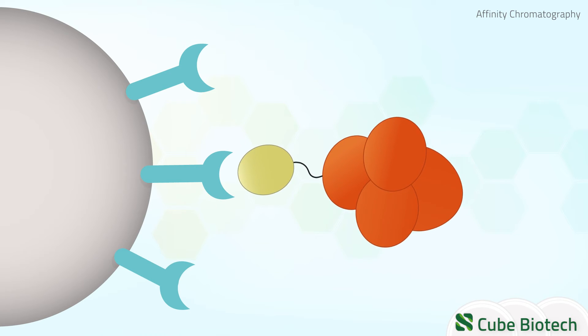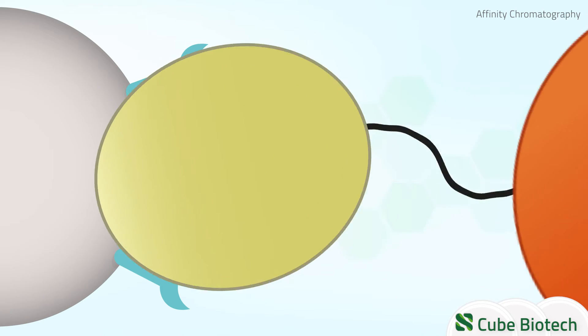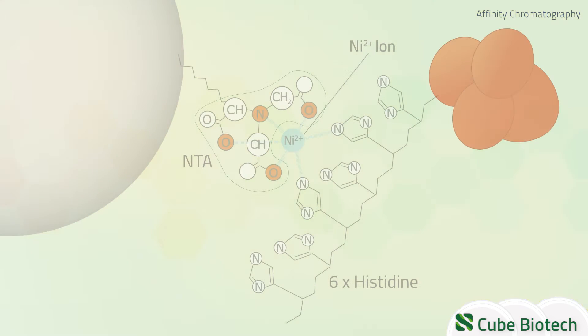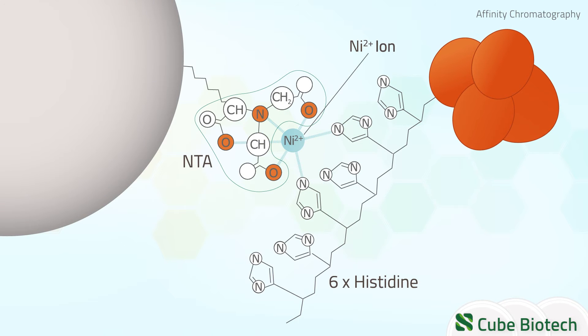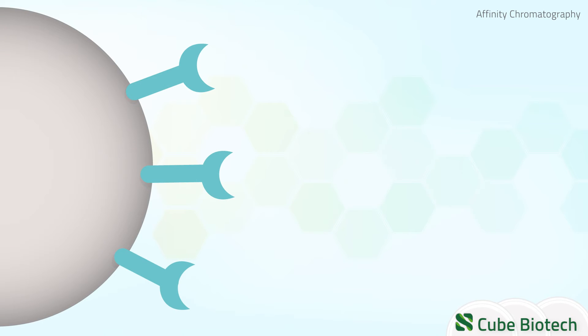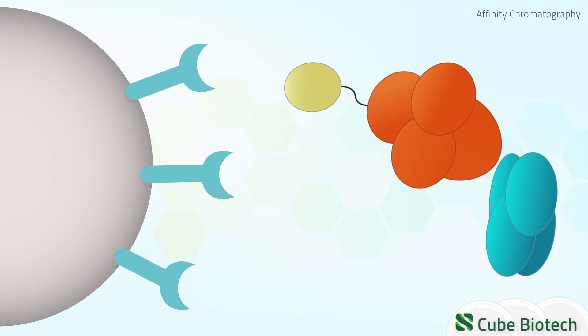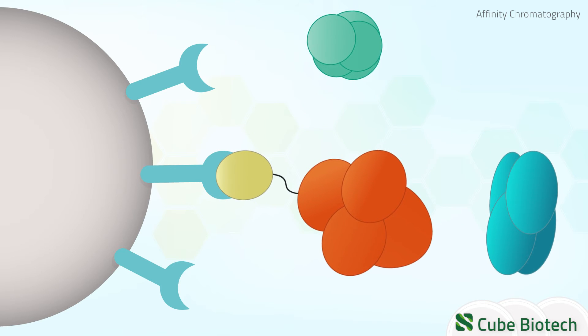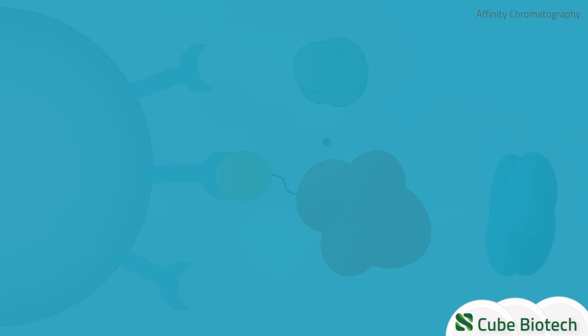The most prominent affinity tag is the HIS tag. The HIS tag has an affinity towards metal, such as Ni2+, coordinated by chelators. To purify a HIS-tagged protein, the protein solution is added to chromatography beads, which are complexed with a ligand such as NTA. The tag then binds to the metal on the bead and everything else that is not bound is washed out.